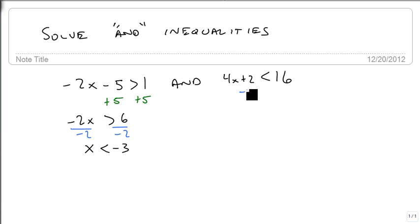For our other example, we're going to subtract 2 from both sides. Get 4x is less than 14. We're then going to divide by 4. Reduce our fractions as far as we're able. Get x is less than 7 halves.